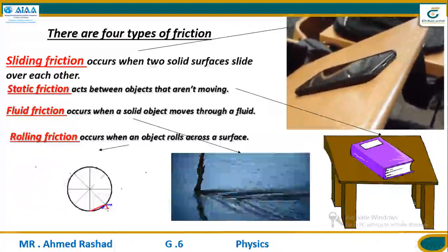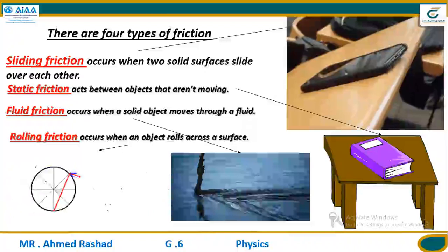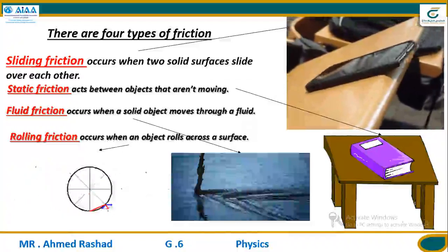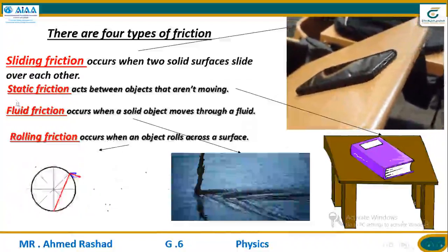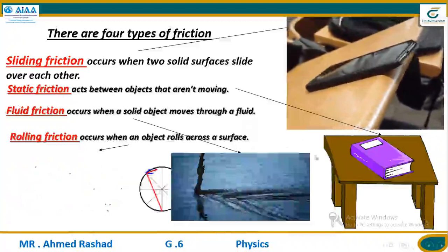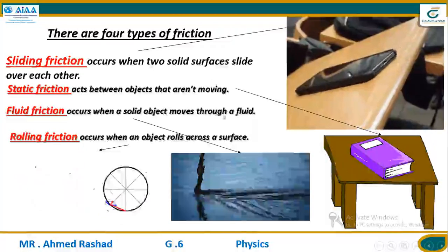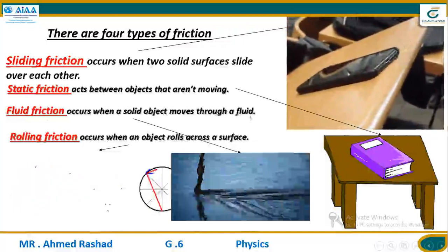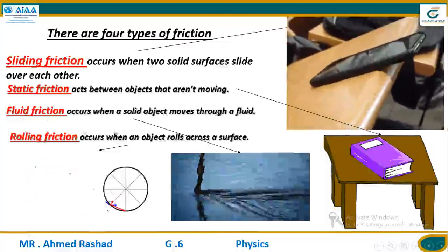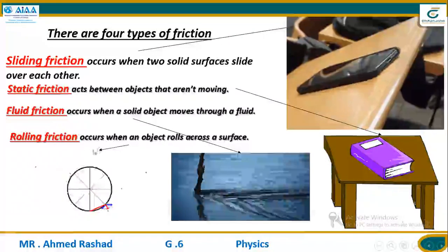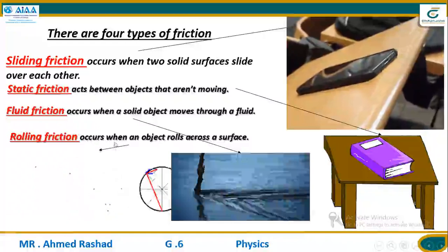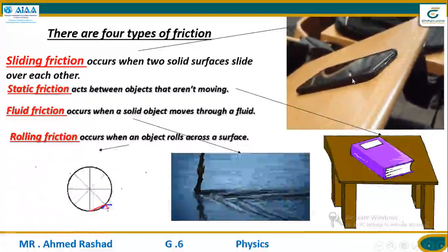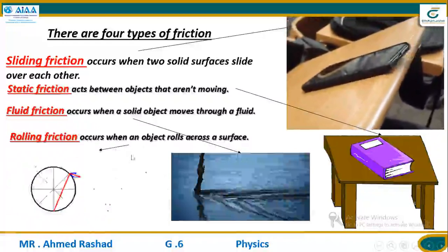We have four kinds of friction. First, sliding friction happens between two solid surfaces sliding together, like a phone and a chair. Second, static friction occurs between two objects that aren't moving, like a block and a chair. Third, fluid friction occurs between a liquid or fluid and a solid object. Fourth, rolling friction, like the wheels of a toy car, occurs when an object rolls across a surface. These are the four main kinds of friction.